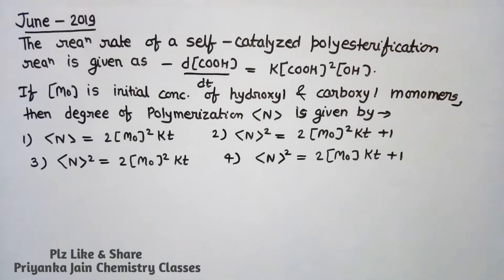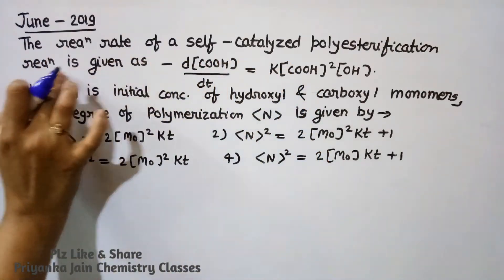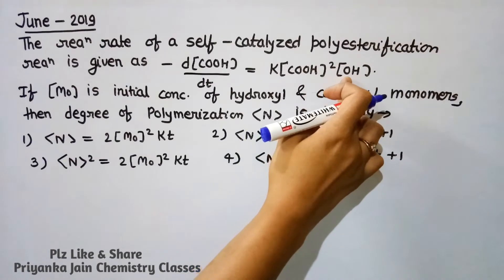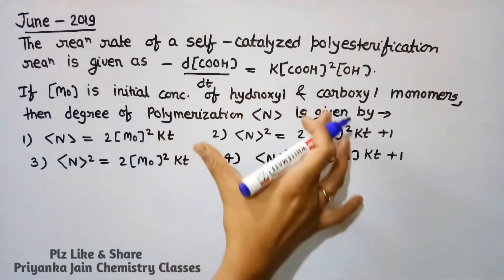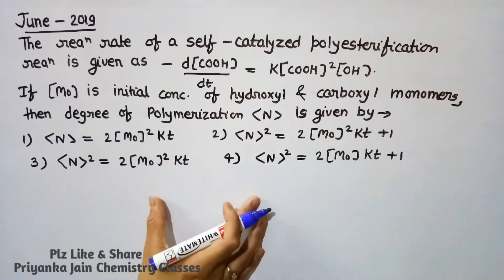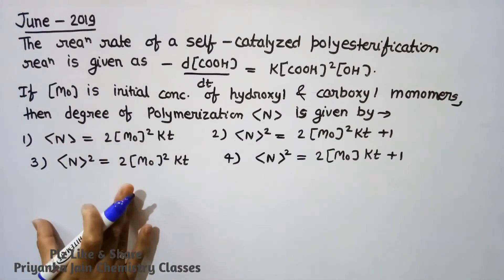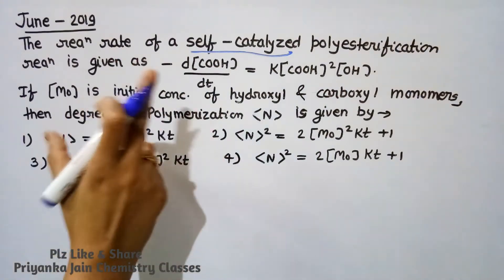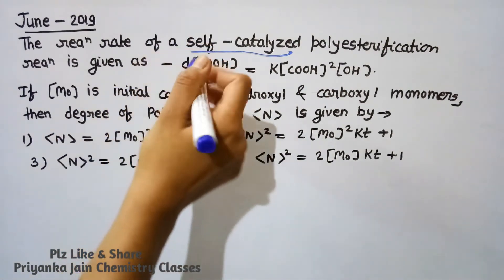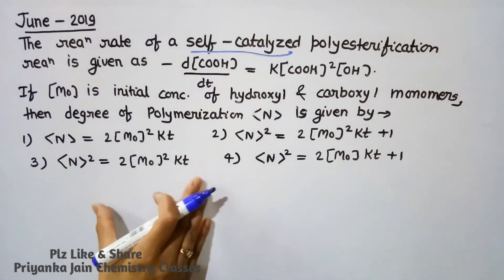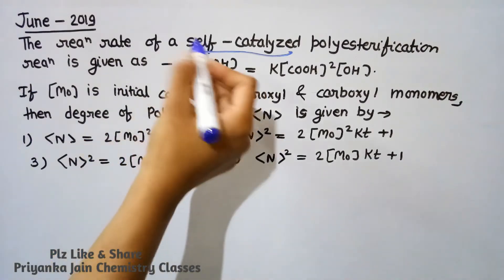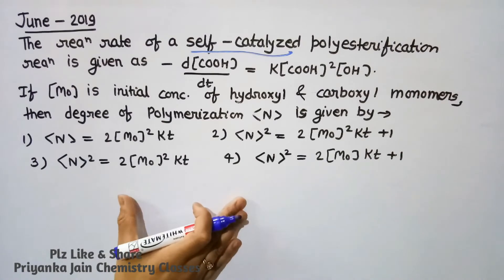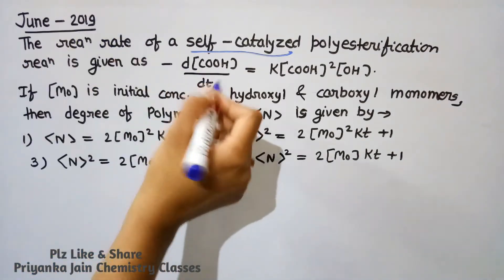From June 2019: The reaction rate of a self-catalyzed polyesterification is given as −d[COOH]/dt = K[COOH]²[OH]. If M0 is the initial concentration of hydroxyl and carboxylic monomers, find the degree of polymerization N. To solve this, you need to know the kinetics of both self-catalyzed and acid-catalyzed condensation reactions, as both types of questions may appear.